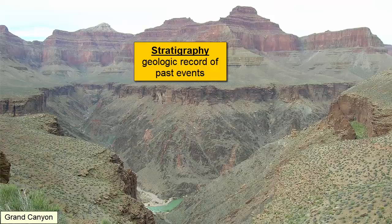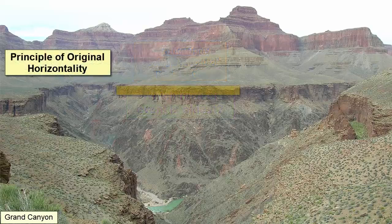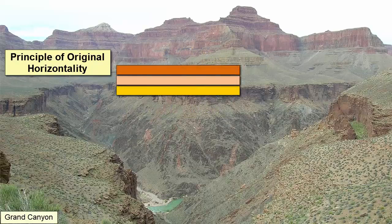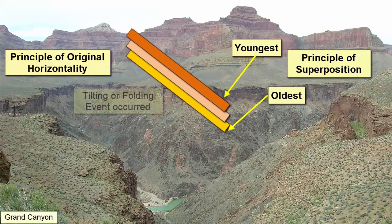The process of relative dating begins with determining which rocks or events in an area are the oldest, then placing each successive event in sequence relative to the others to build a stratigraphy. The principle of original horizontality describes the general tendency for sediments or lava flows to be deposited or erupted in horizontal layers. The principle of superposition states that the lowest sedimentary rocks in an undisturbed sequence were deposited first and therefore are oldest. If we later see tilted or folded strata or lavas, we know a tectonic event deformed the layers after they were originally deposited.